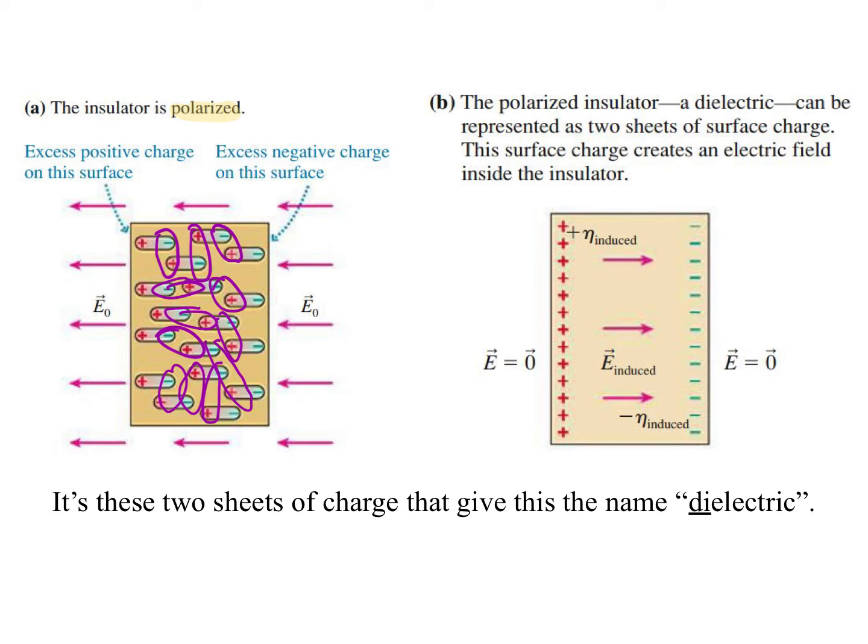The rightward pointing induced electric field counteracts some but not all of the external leftward pointing field. And they try and show this here by spacing them out a little bit to show that it's weaker but points the other way.